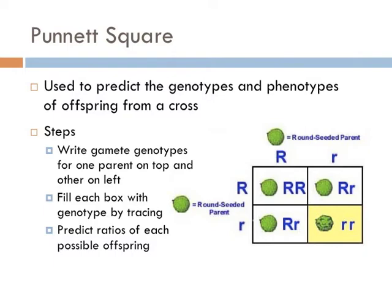So this is a cross of two heterozygotes, capital R and lowercase r. When we cross two heterozygotes, we would expect a fourth of them to be homozygous dominant (capital R, capital R), half of them to be heterozygous (capital R, little r), and a quarter of them to be homozygous recessive (little r, little r). However, since the dominant trait masks the recessive trait in the heterozygotes, the phenotypes would be expected to be three quarters round seed and one quarter wrinkled seeds.